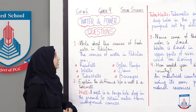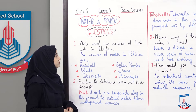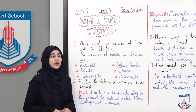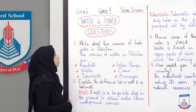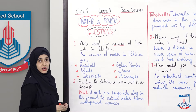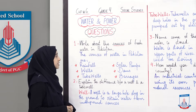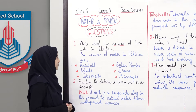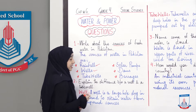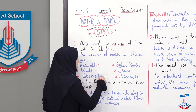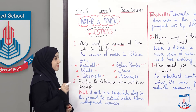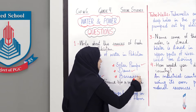Toh, pahla question hai: write about the sources of fresh water in Pakistan. Ab woh aap se pooch ra hai ke Pakistan mein kawn se fresh water sources hain, yani ke kahaan se fresh water liya ja sakta hai. So, the sources of water in Pakistan are: the first one is rainfall, yani ke baarish, then wells, yani ke kuen, tube wells, solar pumps, yani ke solar light se chalne wale pumps, then there are dams and barrages.